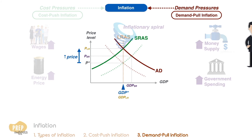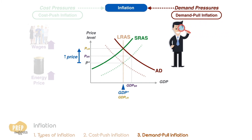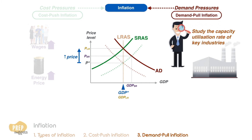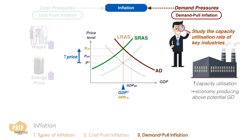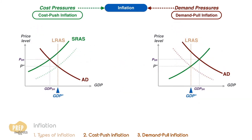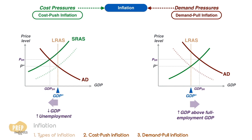To measure the potential for demand-pull inflation in an economy, economists often study the capacity utilization rate of key industries. High rates of capacity utilization suggest that the economy is producing above potential GDP and may experience inflationary pressure. The key difference between demand-pull and cost-push effects is the impact on output: the demand-pull effect increases GDP above full employment GDP, while the cost-push effect decreases GDP, resulting in higher short-term unemployment.